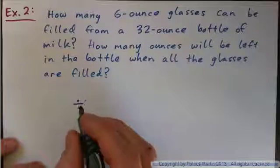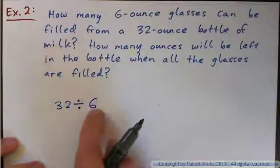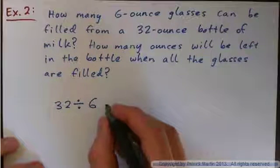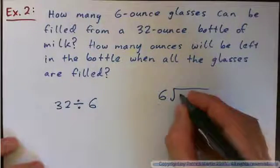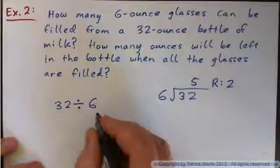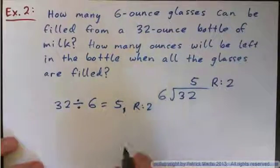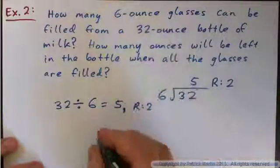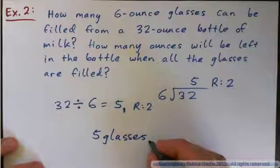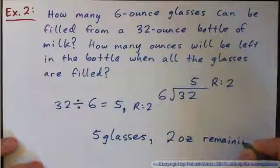A bottle has 32 ounces, just one bottle. If we divide that by 6, it's asking how many 6's are contained in 32. 6 into 32 goes 5 times remainder 2. So the answer is 5 remainder 2. How many glasses? Five 6-ounce glasses, because 5 times 6 is 30 ounces. And then you'll have 2 ounces remaining in the bottle. Does that make sense?